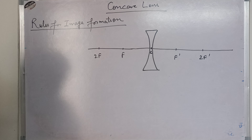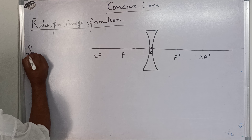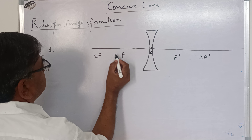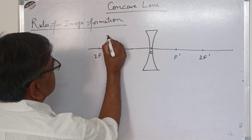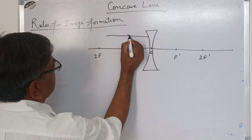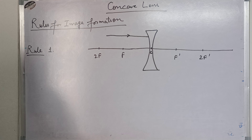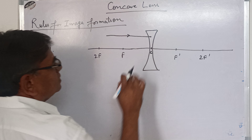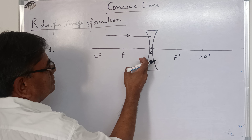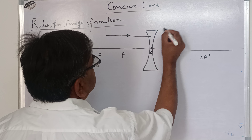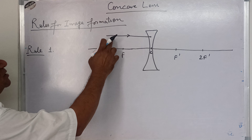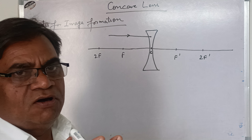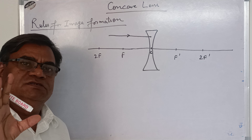Rule 1: when a ray is incident parallel to the principal axis. Since this is a diverging lens, all rays will go in this direction. Since the ray is parallel to the principal axis, after divergence it will go along the line which passes through the focus. That is the rule.